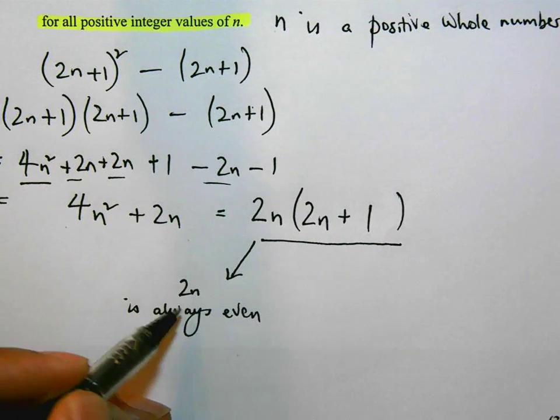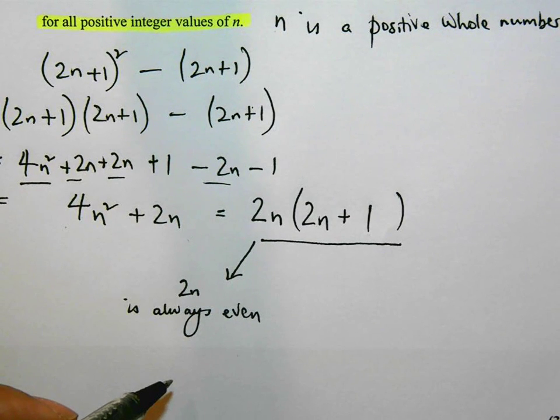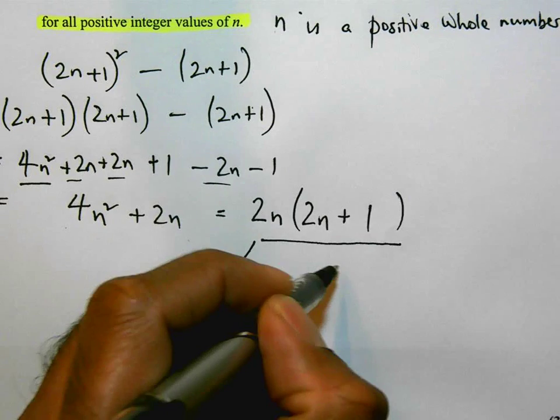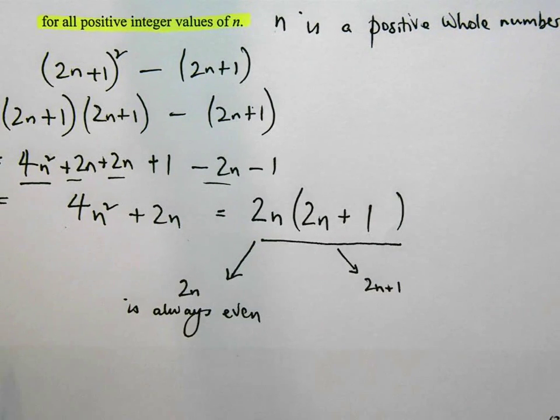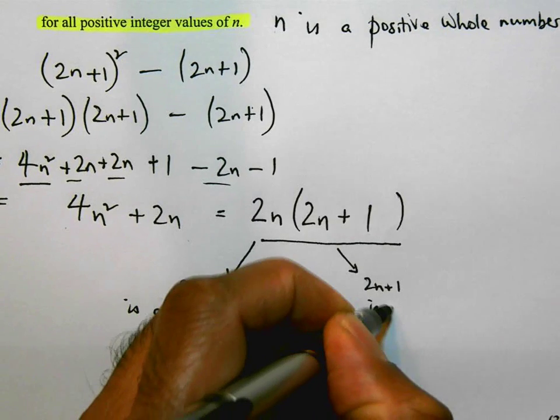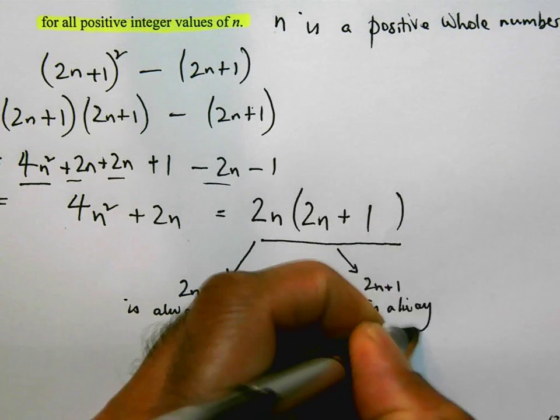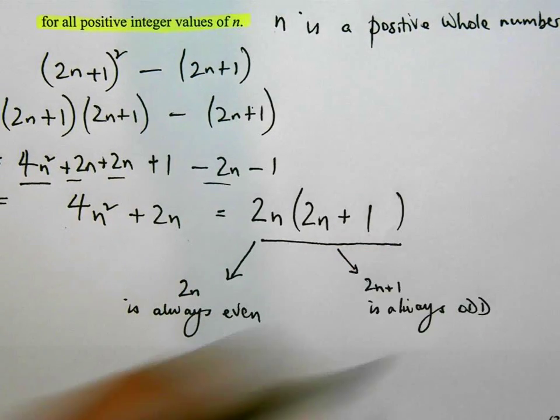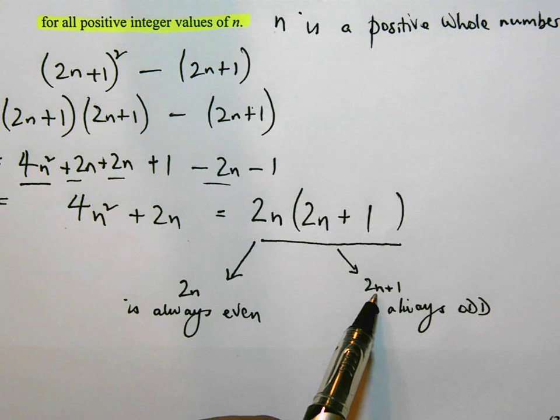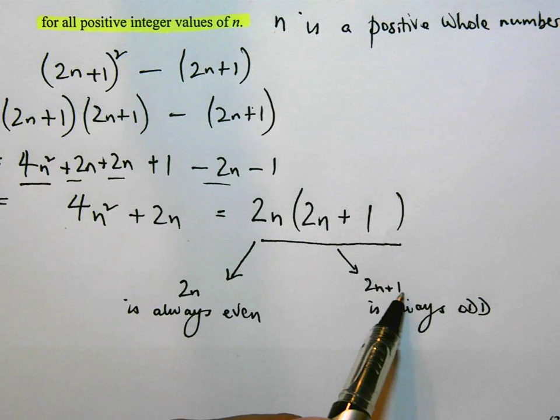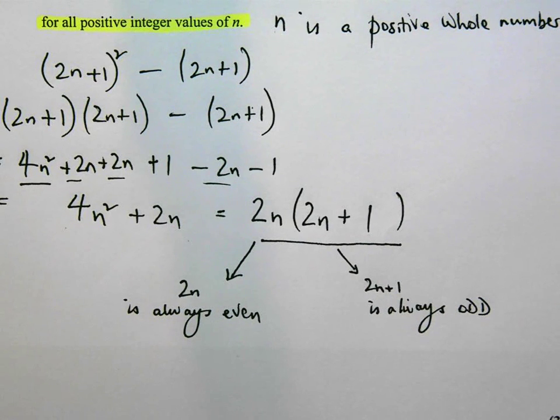2n+1 is always going to be an odd number. And that's because 2n is even. And even plus 1 is going to turn into an odd number. So 2n+1 is always odd. And these are rules that you should be familiar with, especially with these types of expressions.